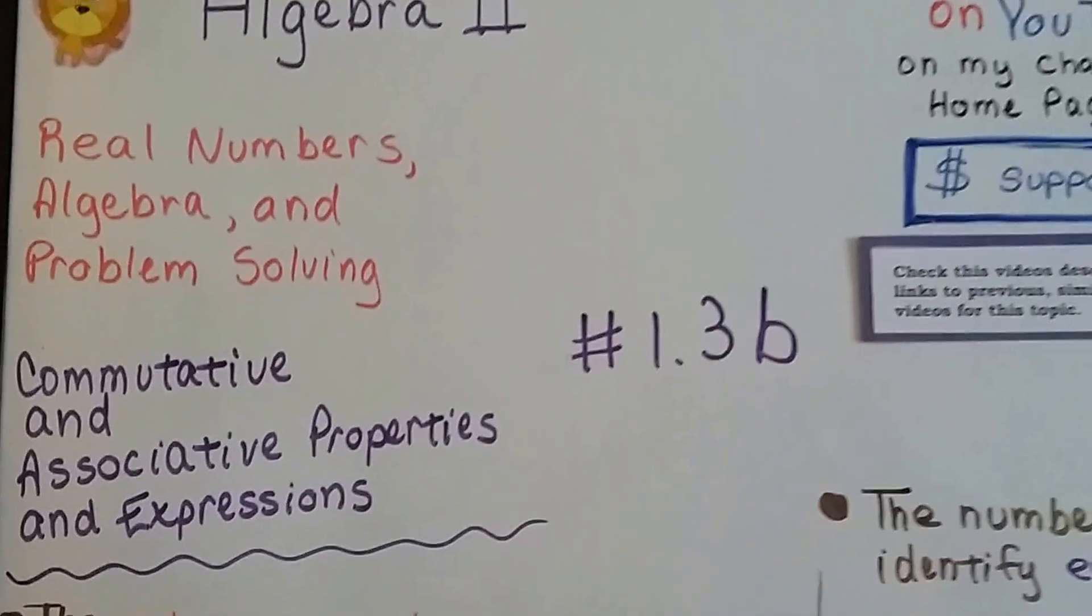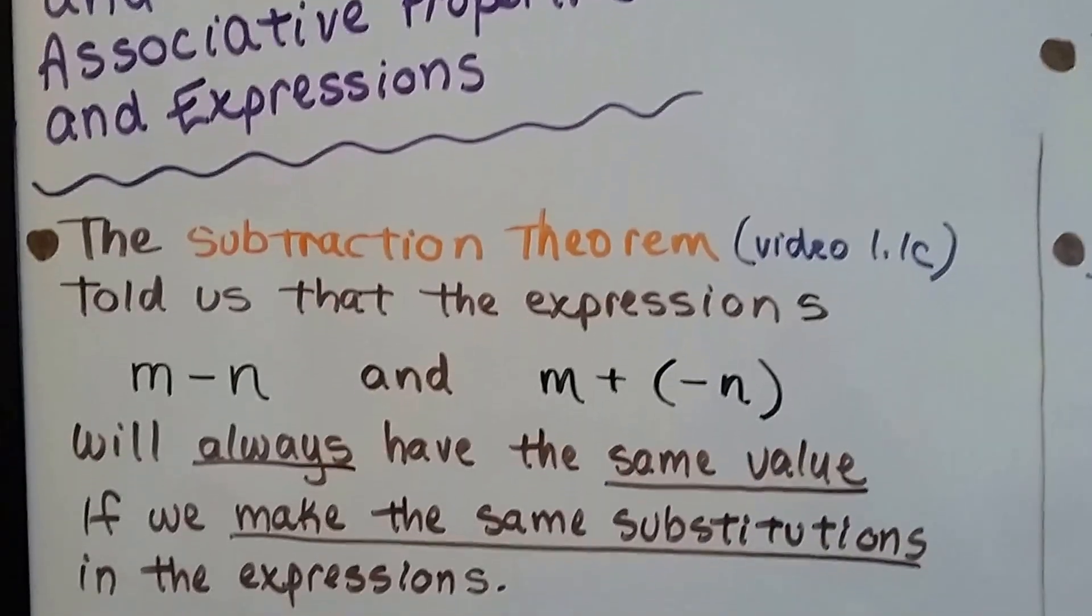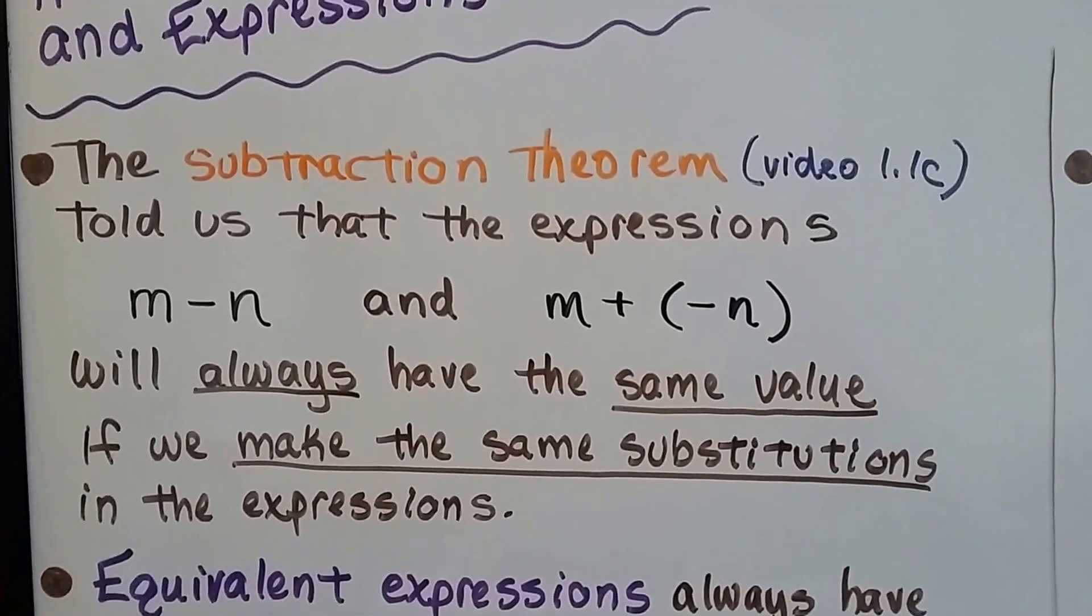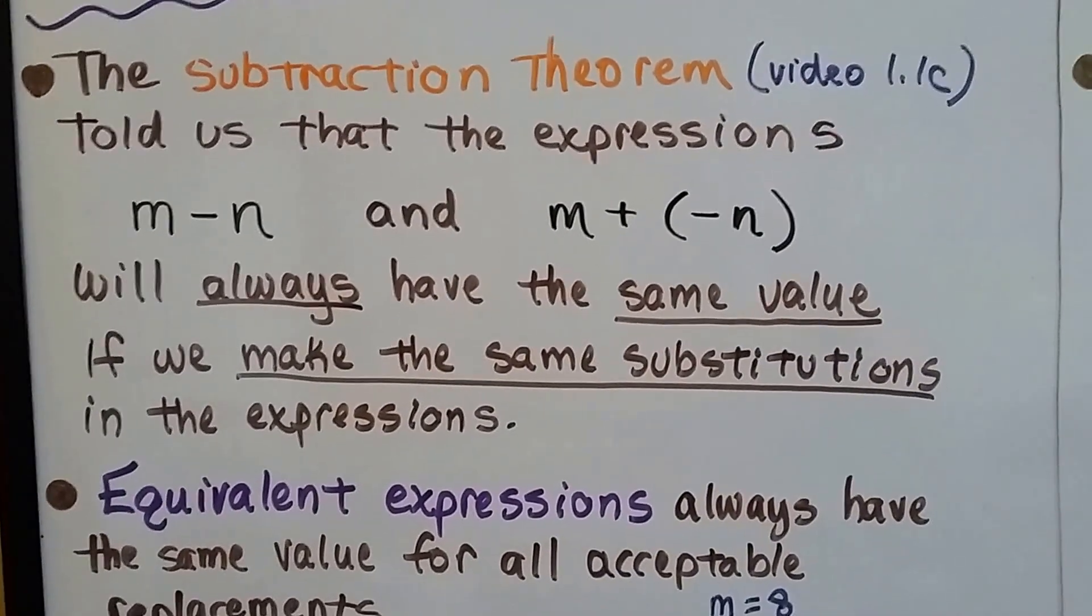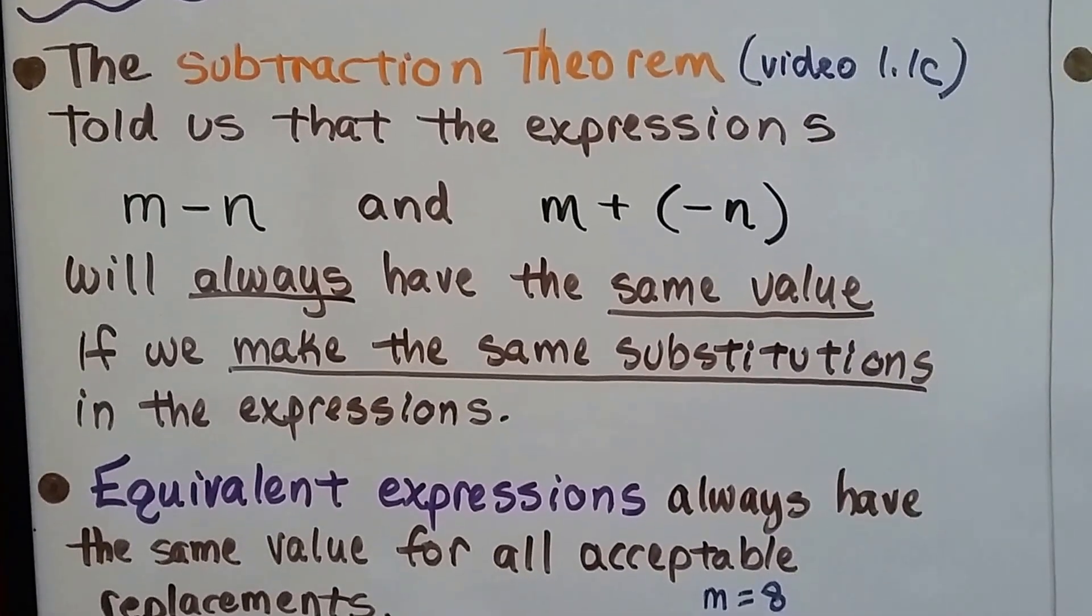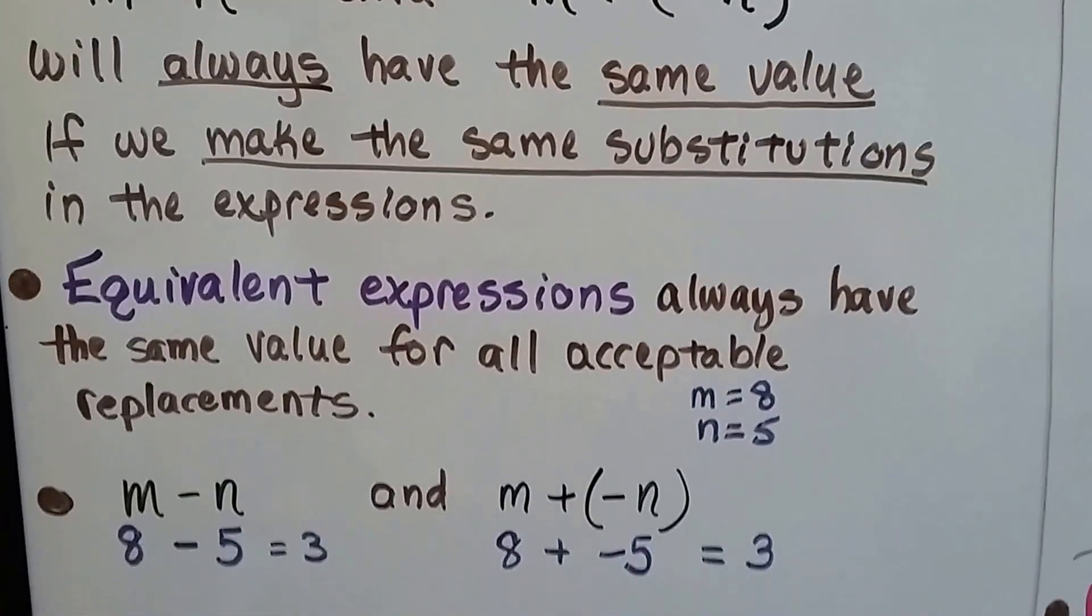Algebra 2, 1.3b, commutative and associative properties and expressions. So the subtraction theorem that we learned about in video 1.1c had told us the expressions like m minus n and m plus a negative n will always have the same value if we make the same substitutions in the expressions.